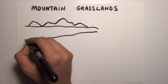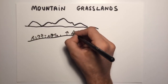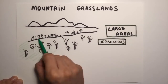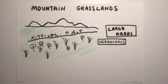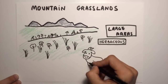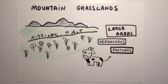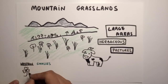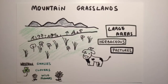Let's talk about the mountain grasslands. Plants in the mountain grasslands are herbaceous, which means they have a soft and flexible stem. These grasslands extend over large areas of fertile soil that can be used as pastures for cattle to raise. Mountain grasslands consist of grasses, clovers and many kinds of wildflowers.